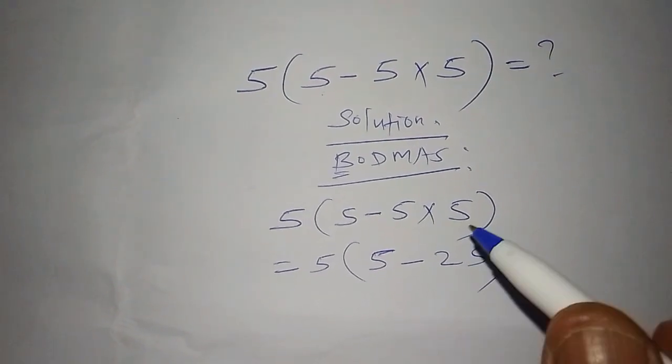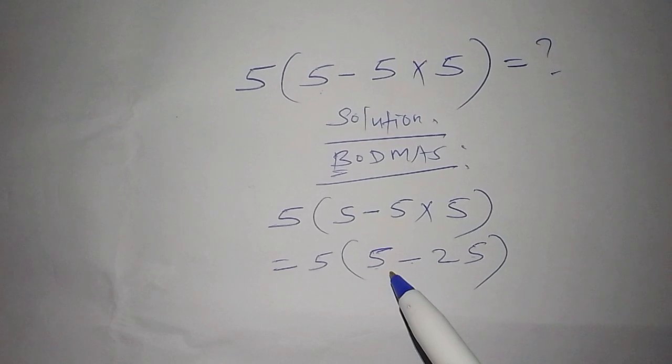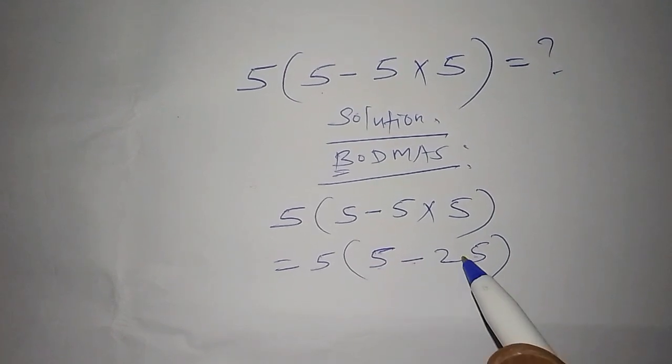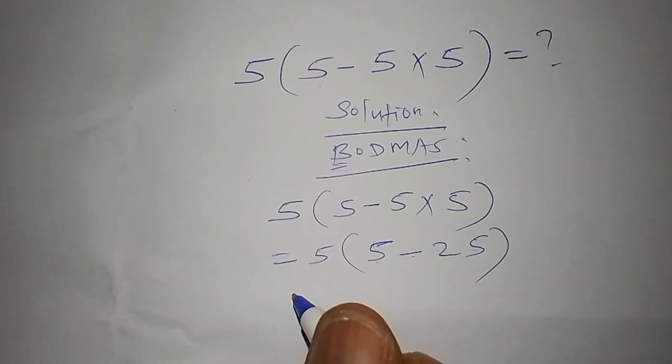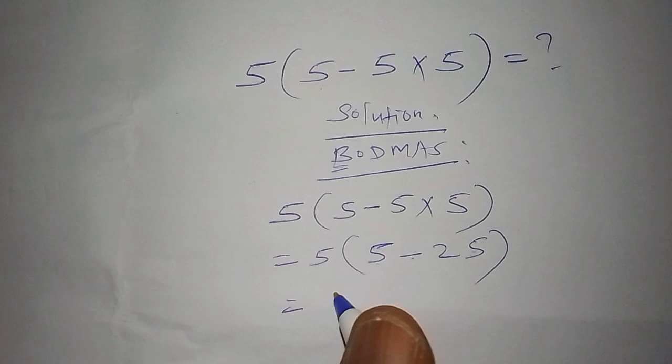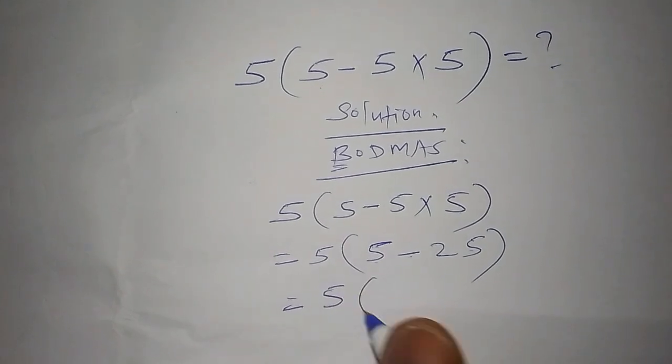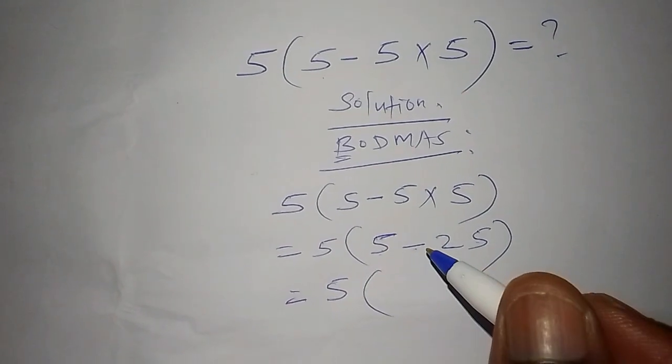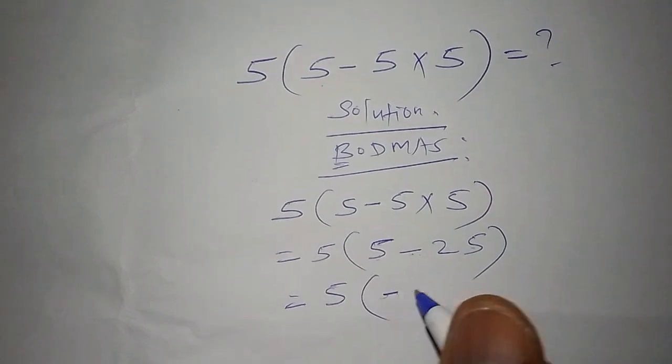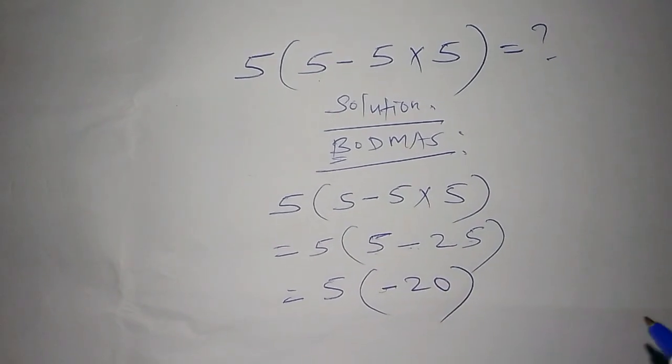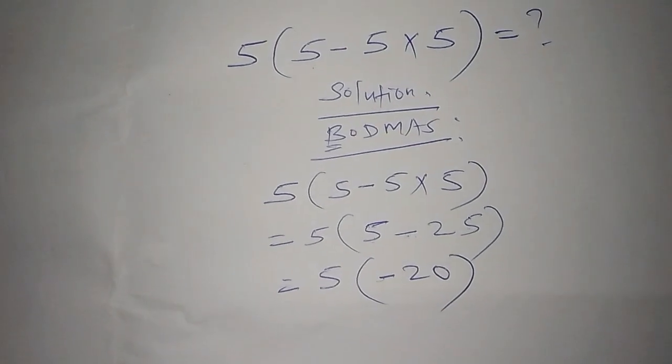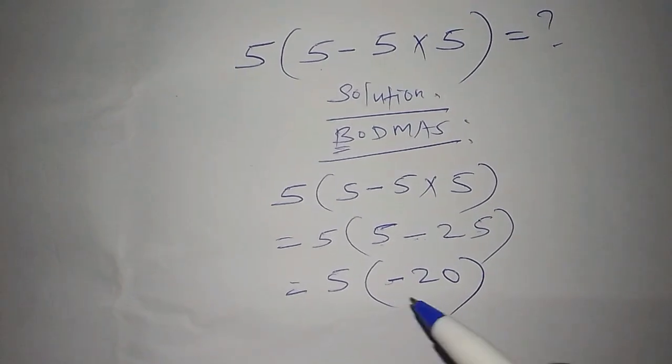From there we're going to work out the final, that is 5 minus 25. We shall say that this one equals 5 into bracket 5 minus 25 becomes minus 20. Then we close the bracket. We are done with the number inside the bracket.